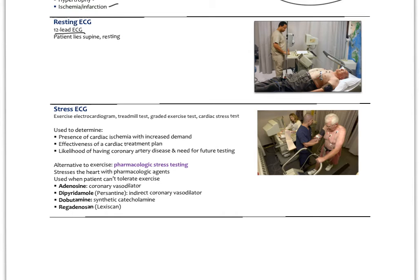Some people can't do the treadmill test but we still need to assess how their heart performs under stress. So we use what's called pharmacologic stress testing, which stresses the heart with different pharmacologic agents. Adenosine is one example — it's a coronary vasodilator. There are various pharmacologic agents used to essentially assess the function of the heart.